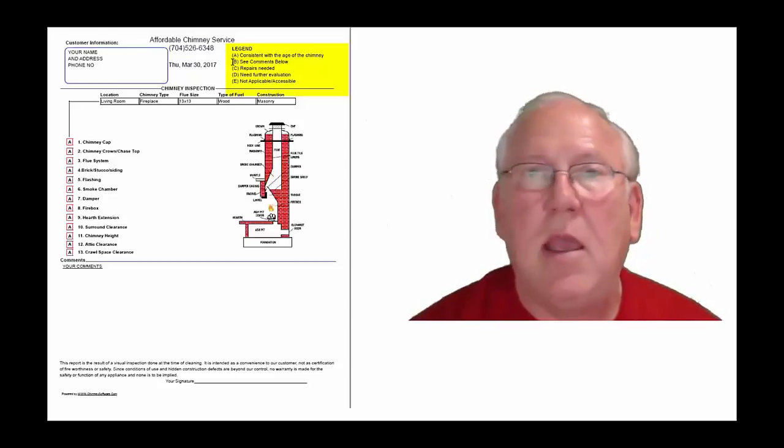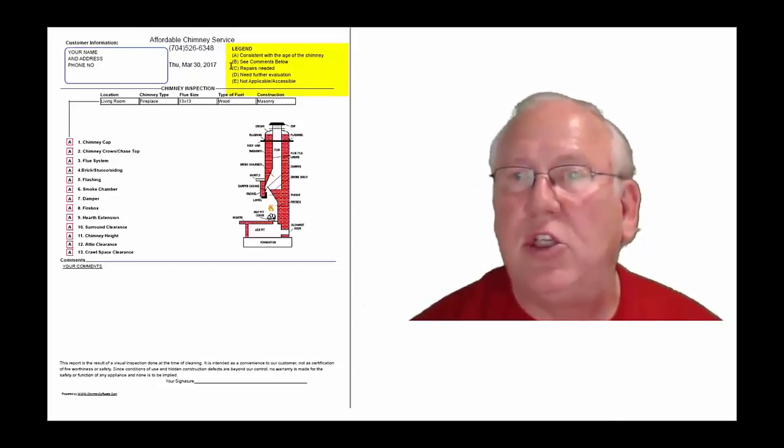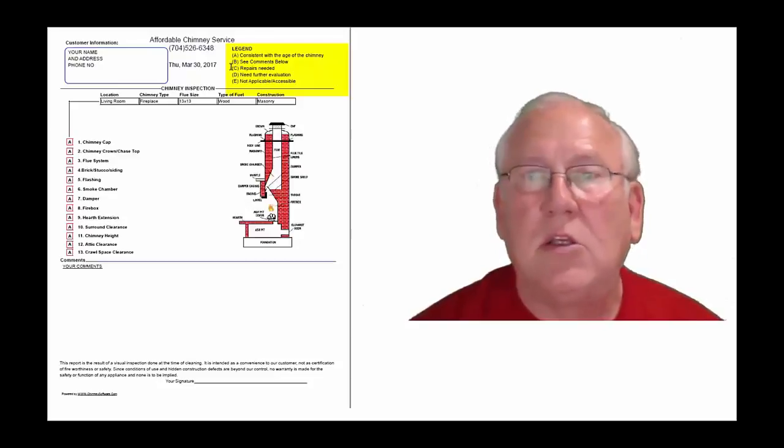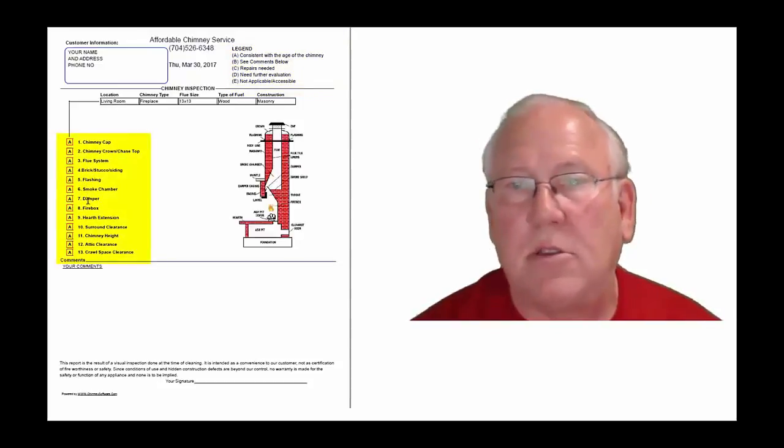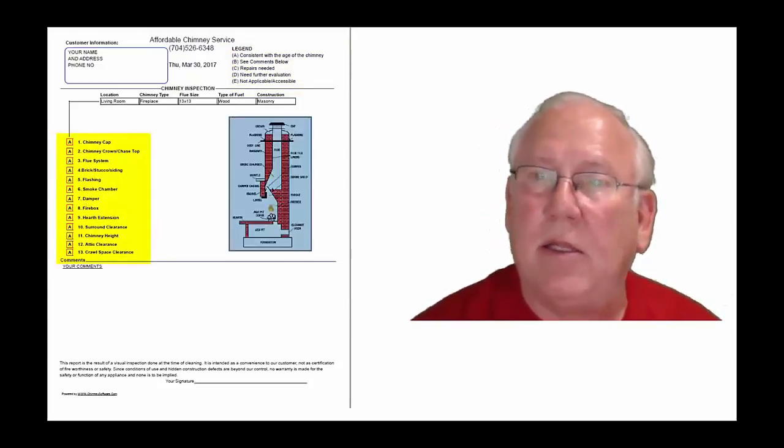Each one of these initials pertains to something. A is consistent with the age of the chimney. B, see comments below. C, repairs needed. D, need further evaluation, or E, not applicable. And they're placed into the boxes next to the parts of the chimney that can be easily identified in this diagram.